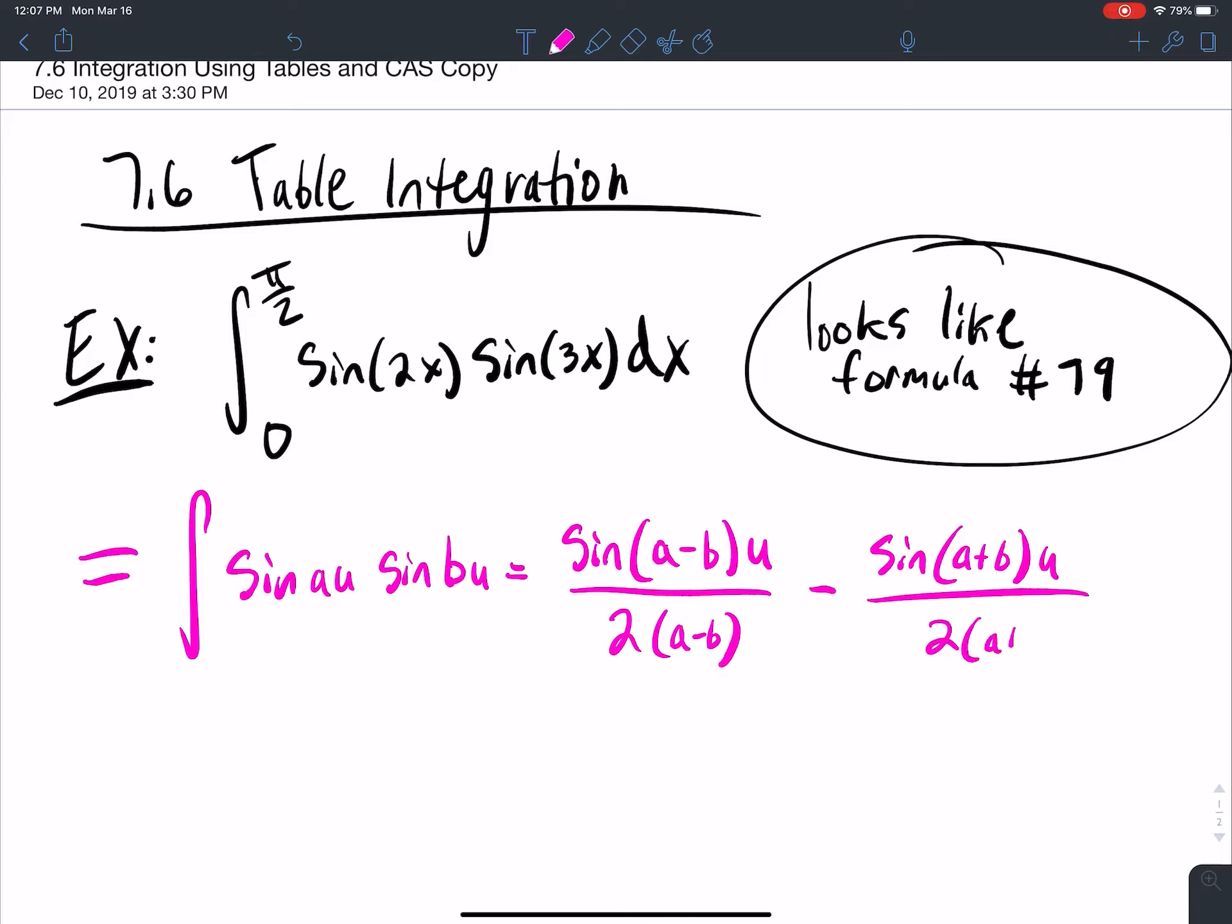Really all it amounts to is plugging and chugging. A here looks like it's two and B here looks like it's three. So A is equal to two, B is equal to three. And once you have the formula, all you have to do is plug in the numbers.